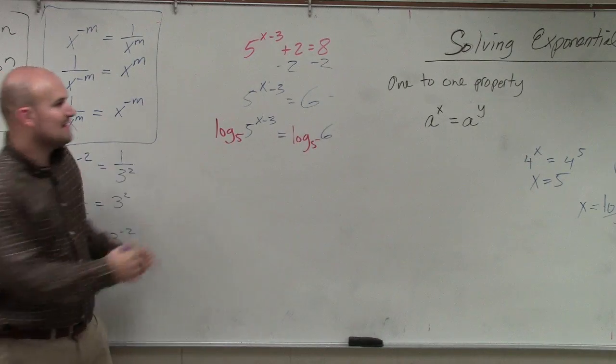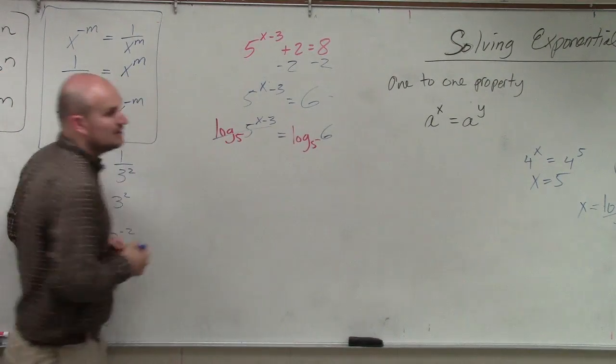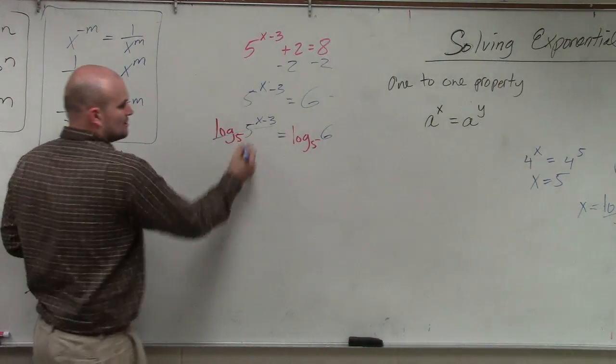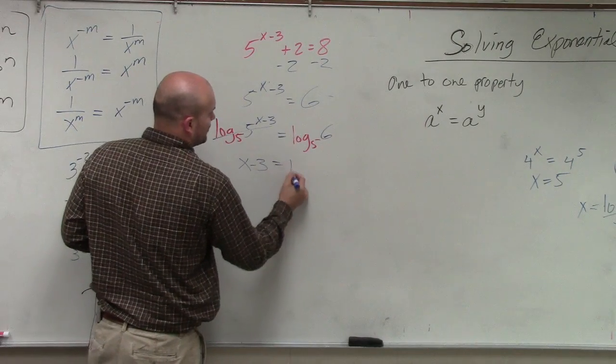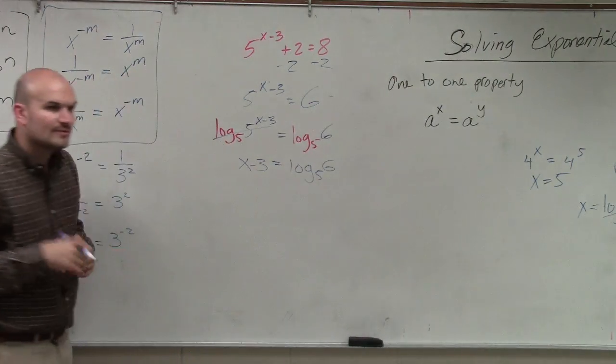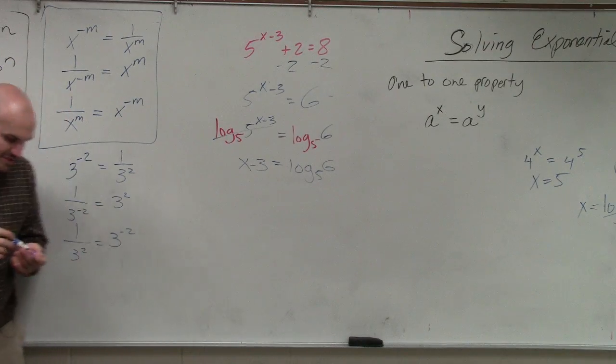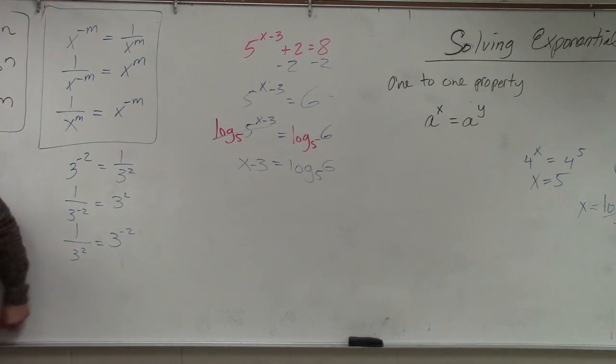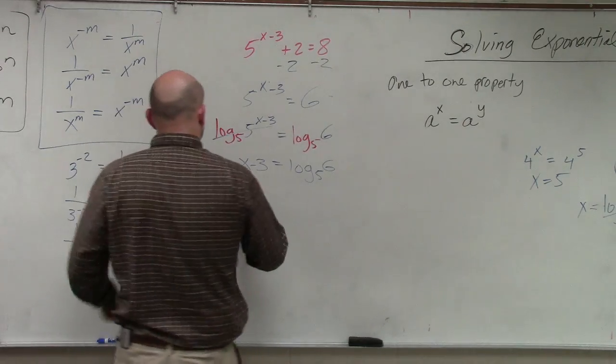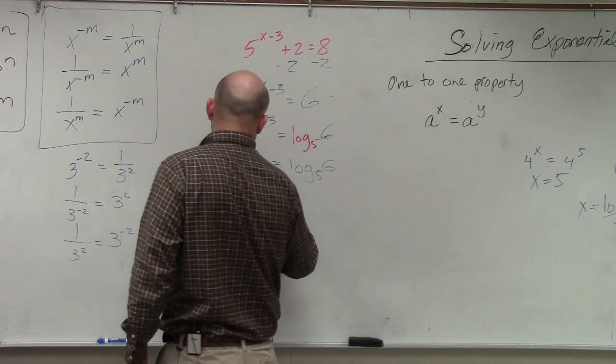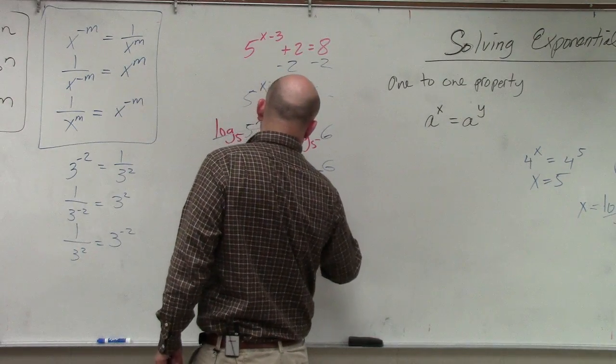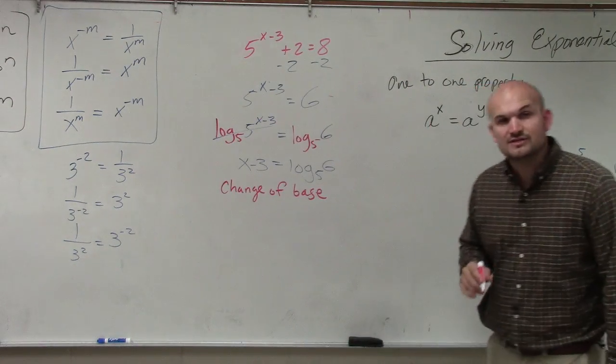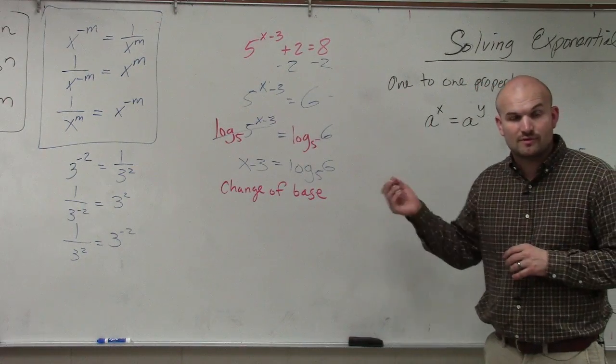Then, log base 5 of 5, as I mentioned over there, is just going to equal 1. So we're just left with x minus 3 equals log base 5 of 6. Now, the thing that I want you guys to make sure you write down so you guys remember and that you guys have is what we call the change of, just give me a second and I'll finish.